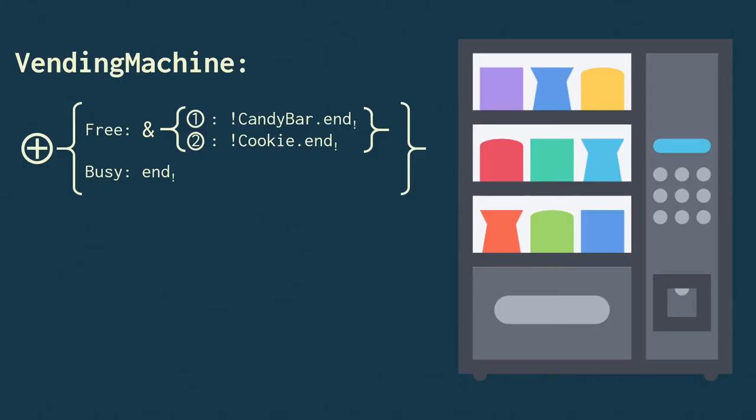Session types can be thought of as types for protocols. Now, suppose we have a vending machine which can only be used by one person at a time. The vending machine begins by communicating whether it's free or busy. If it's free, then it offers the choice between two buttons: one, which dispenses or sends a candy bar, and two, which dispenses a cookie. If it's busy, then the session ends.